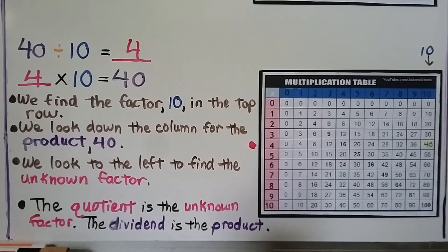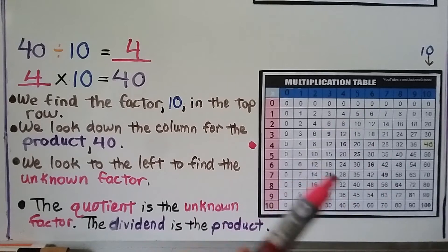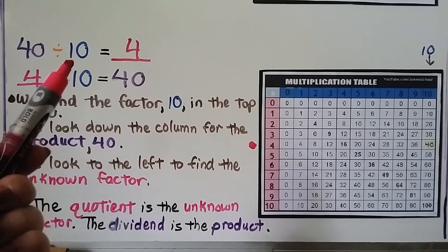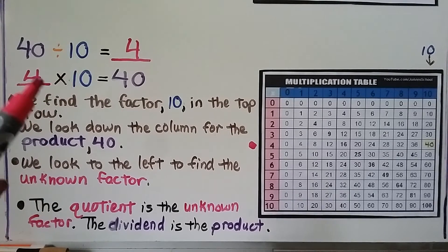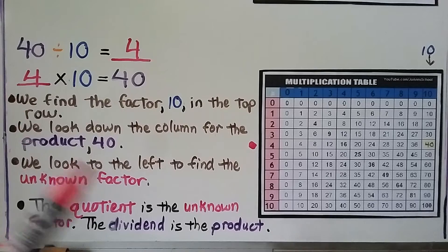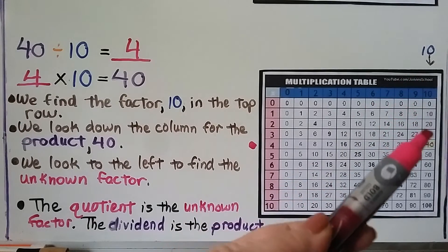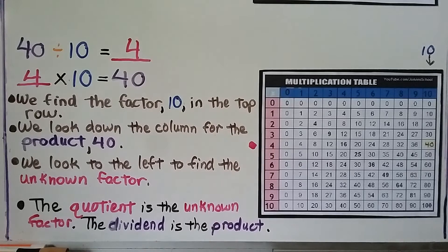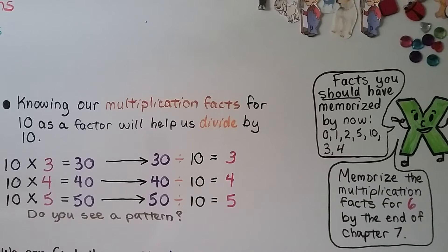The dividend — the amount in all — is going to be one of the products in the multiplication table. We use the divisor as one of the factors and look for the missing factor. We used 10 as one of the factors and looked for the 4 as the missing factor. Knowing our multiplication facts for 10 as a factor will help us divide by 10.